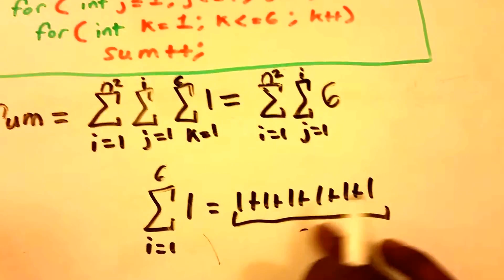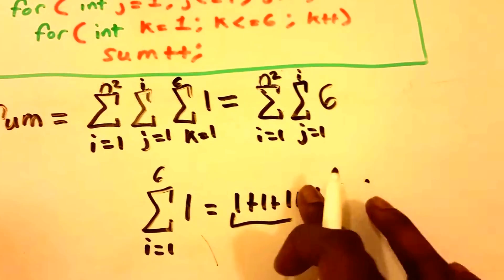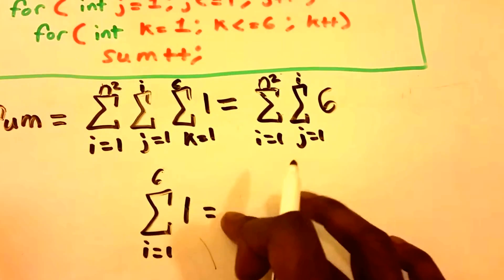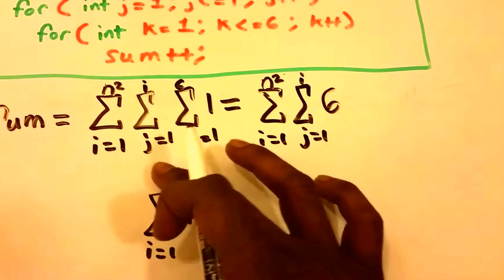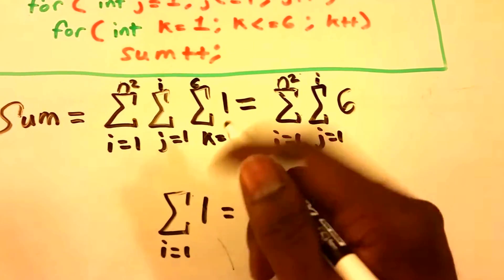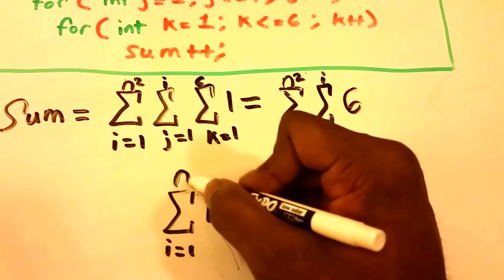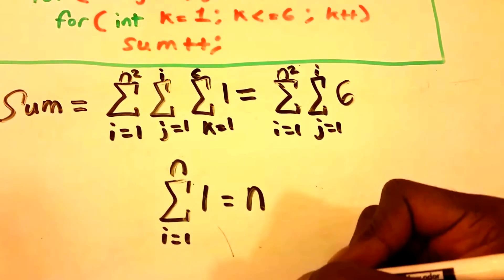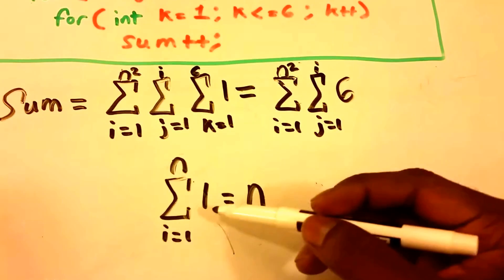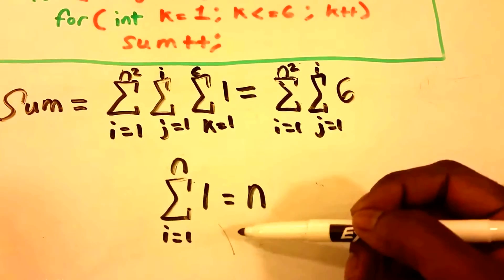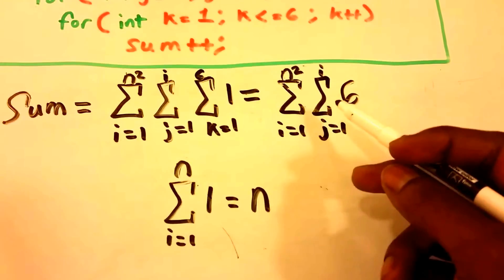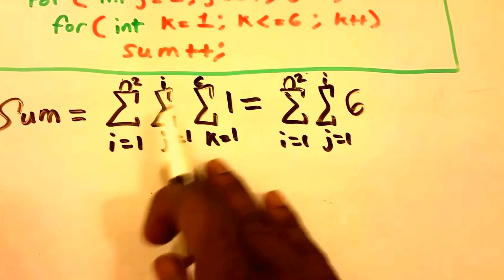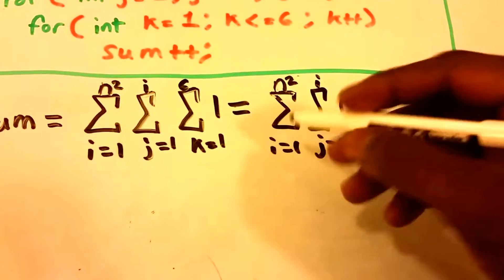The formula works like this: no matter what that value at the top is — say it's some arbitrary value — the summation of 1 from 1 to that value is always going to equal that arbitrary value. So this is the summation formula we use for our third summation here. That's how we get the 6.